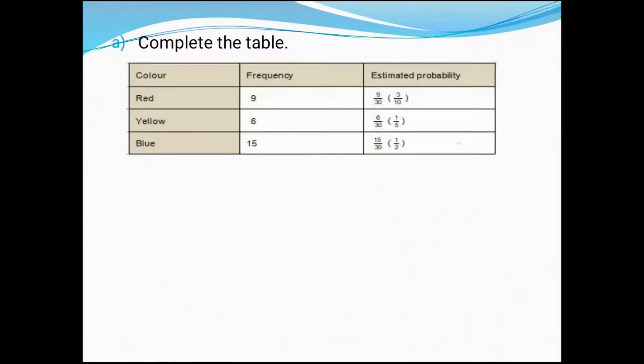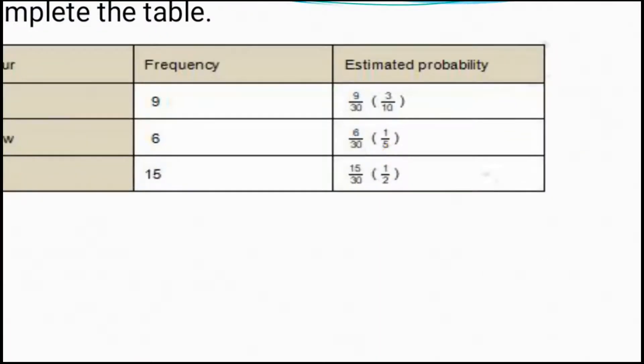Let's start our work. First we have to draw a table: red color, yellow color, blue color. Frequency: it was nine, six, fifteen - we got from the questions. We counted the tally marks and we got the frequency table. Now they are asking for estimated probability. We have to find out. We know the formula: estimated probability is frequency number divided by the total number of events, whatever we have done. So she did 30 times. Nine by thirty - in short form we can tell three by ten, if we use three times table. Three threes are nine, three tens are thirty. Same process: six by thirty, five times table we can use. Six fives are thirty, so one by five we get that.